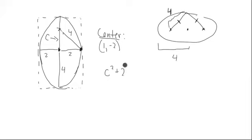c squared plus 2 squared is equal to 4 squared. So we get 16, subtract 4, is equal to c squared. So c is equal to the square root of 12, which is the same as 2 root 3.